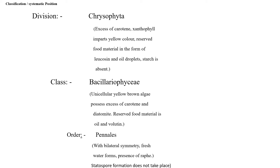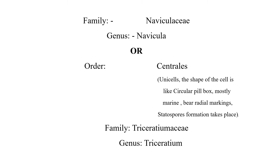Order: Pennales, with bilateral symmetry, freshwater forms, presence of raphe. Staurosporae formation does not take place. Family: Naviculaceae, genus is Navicula — so these are pennate diatoms.